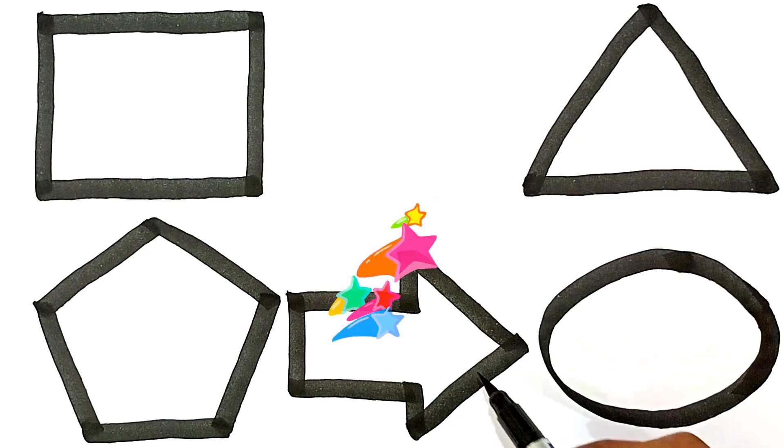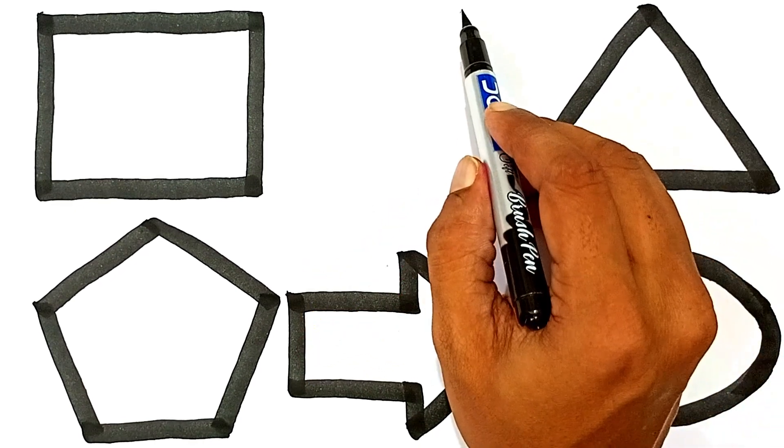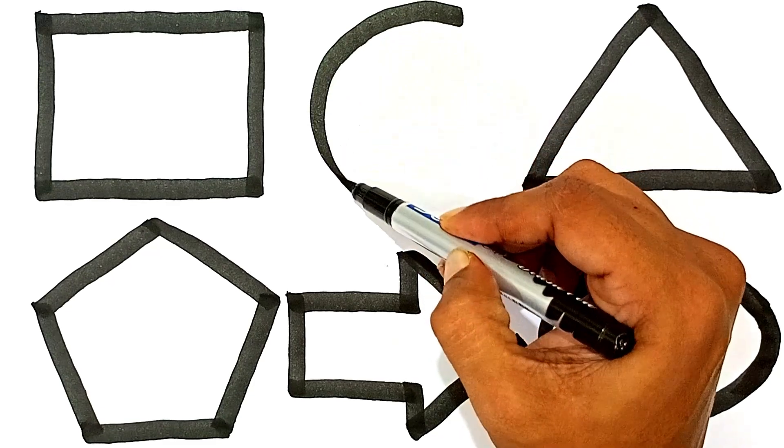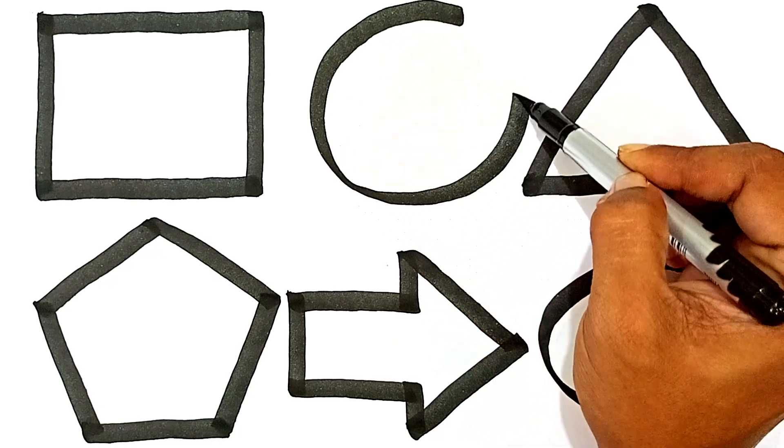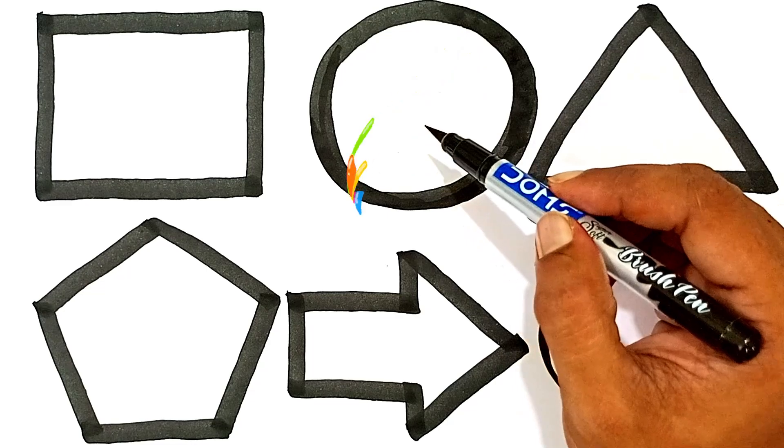This shape's name is arrow. This shape's name is circle.